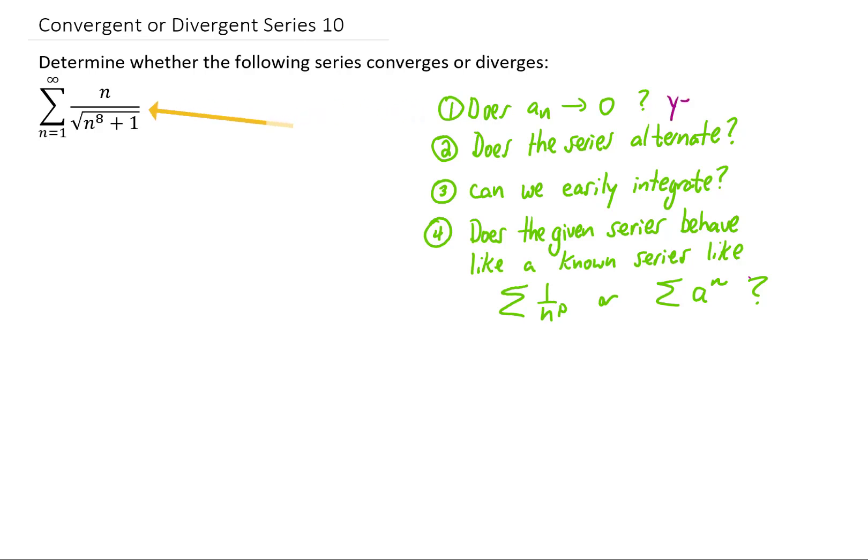In this case, the answer is yes. You'll notice that the power on n is larger in the denominator than it is in the numerator, so the sequence does go to zero, so we have to keep going.